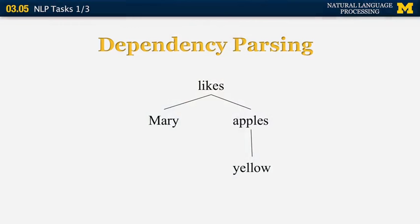The other kind of parsing that is very common these days is called dependency parsing. In dependency parsing, we're not so much interested in S, noun phrases, and verb phrases. We're interested in the relationships between words in the sentence without any explicit constituent structure. A very simple example is the sentence 'Mary likes yellow apples,' whose dependency representation is shown here — it is always in the form of a tree.